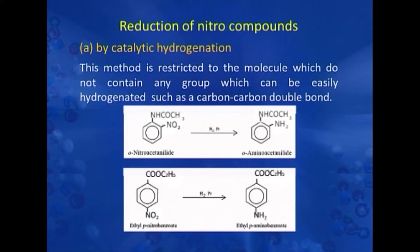In this particular example, we have a nitro group which will be reduced to an amino group, and we also have a carbonyl group. Since the carbonyl group is not affected by catalytic reduction in the presence of nickel, this method can be used on ortho-nitroacetanilide. Similarly, the ester group is also not affected by hydrogen in the presence of catalyst, and that is why reduction can be carried out on this nitro compound.